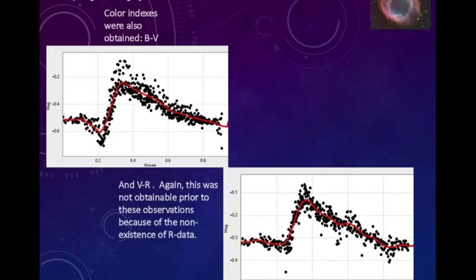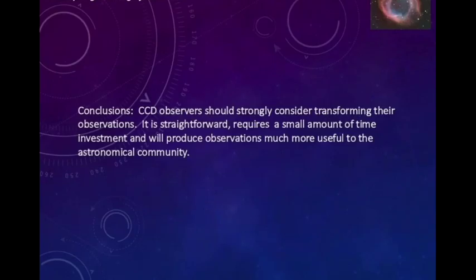And this, I was able to, since I have all of them, I decided to see if I could compute the B minus V, and I got also V minus R. And these are my results. So if you do CCD observing, it would be good if you could try your hand at transforming your data. That way people, you know, researchers all over can use yours without having to think about it. Thank you.